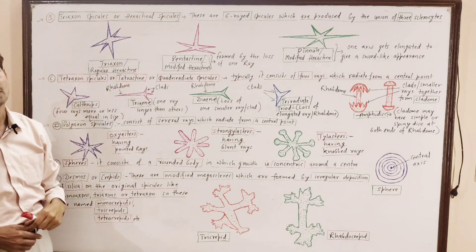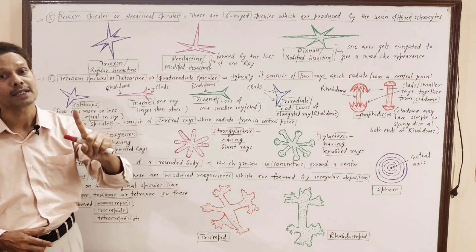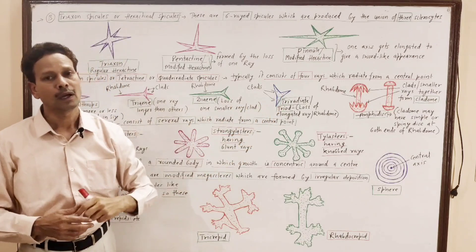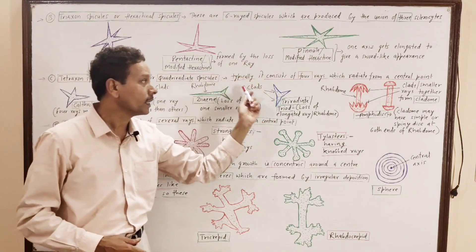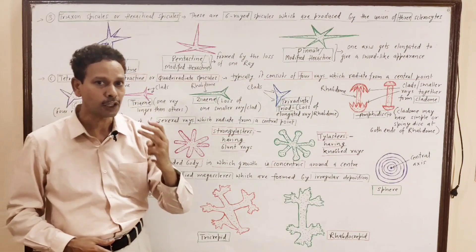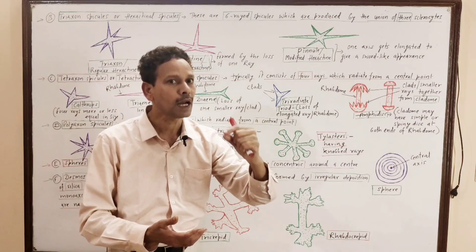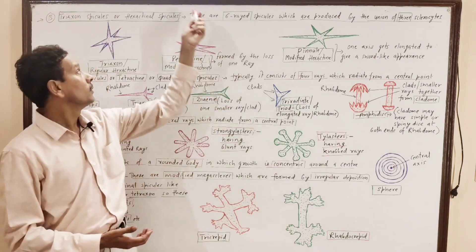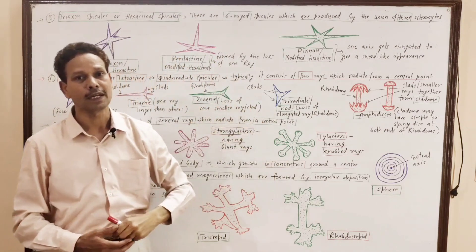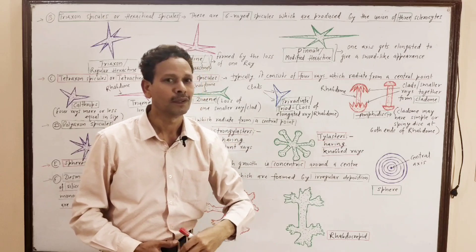Tetraxone spicules are tetra-actine, meaning four rays develop from the central axis, so these are named quadri-radiate. Four rays arise from the central axis, and these tetraxones are formed by the fusion of four sclerocytes. Monoaxone spicules are derived from one sclerocyte, triaxone spicules from three sclerocytes, and tetraxone spicules from four sclerocytes.